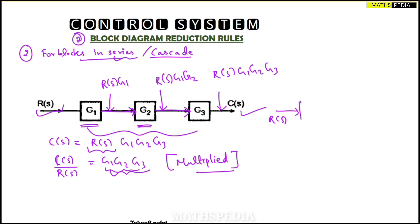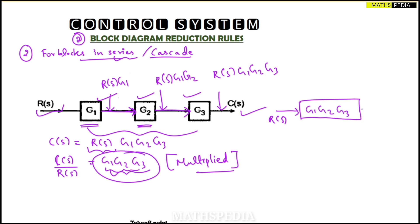These three blocks can be reduced to a single block having transfer function G1·G2·G3, with input R(s) and output C(s). So this complex diagram is simplified into one block. Whenever you see blocks in series, you just multiply them.